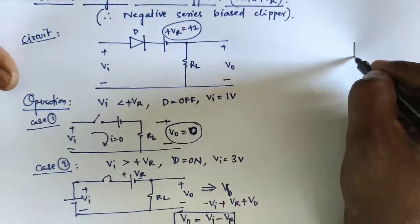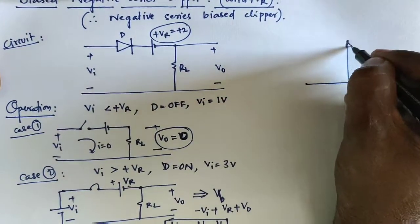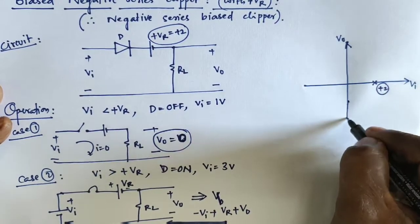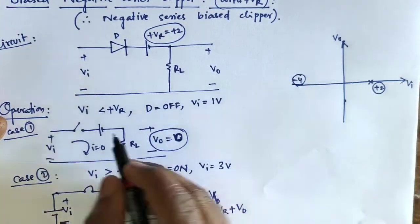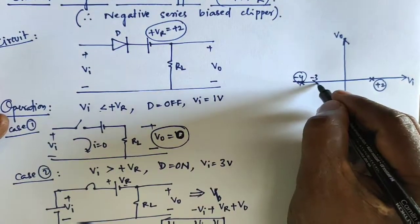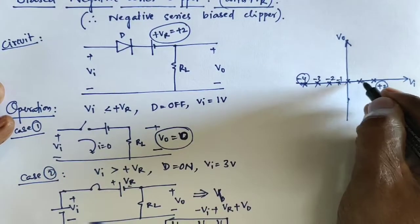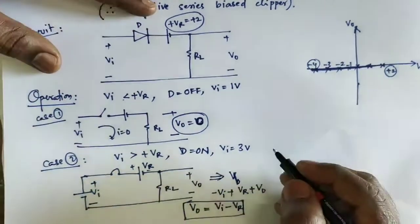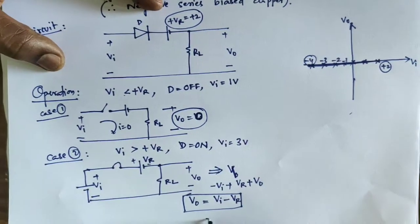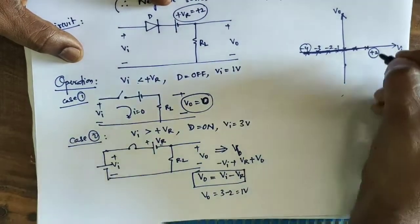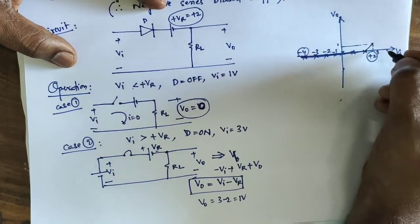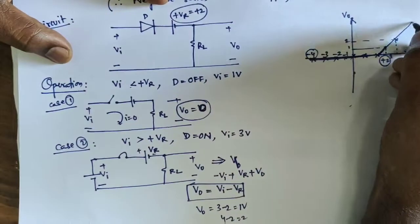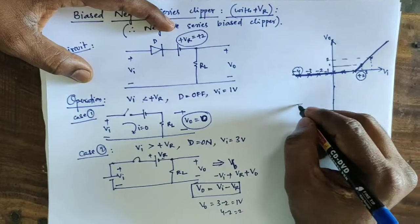Now we design the transfer function, plotting Vi versus V0. Taking plus Vr as plus 2 volts: for input values from minus 3, minus 2, minus 1, 0, up to 2 volts, V0 equals 0. Once the input exceeds plus Vr, V0 equals Vi minus Vr. For example, if Vi is 3 volts, V0 equals 3 minus 2 equals 1 volt. If Vi is 4 volts, V0 equals 4 minus 2 equals 2 volts. Above this threshold, you get a linear slope on the transfer function.